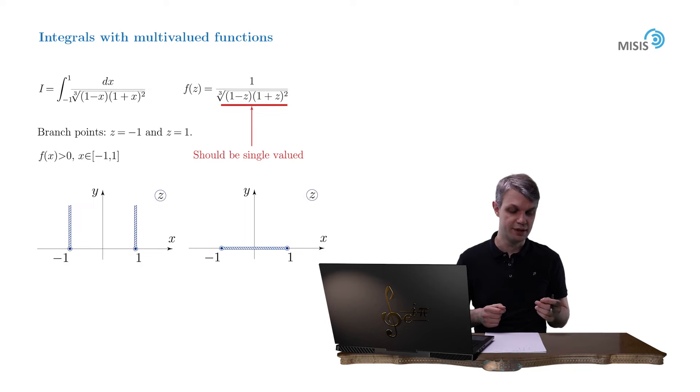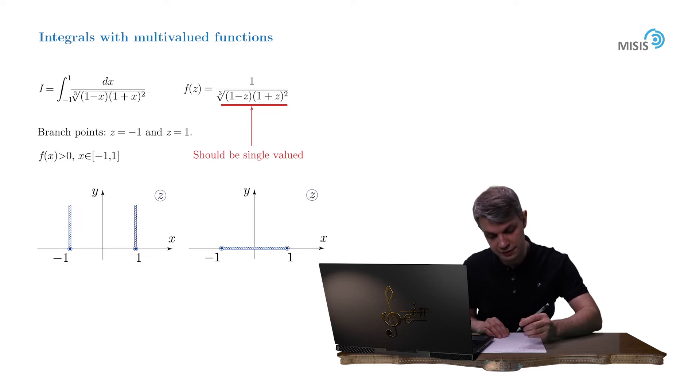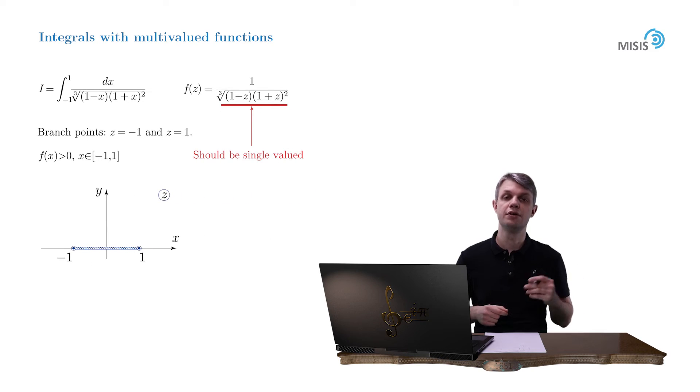Here, miraculously, the endpoints of our contour coincide with the branch points of our multivalued function. So we can draw a branch cut from negative 1 to 1. So the desired goal is achieved, our branch cut coincides with the integration contour.